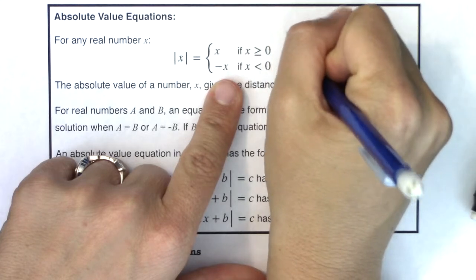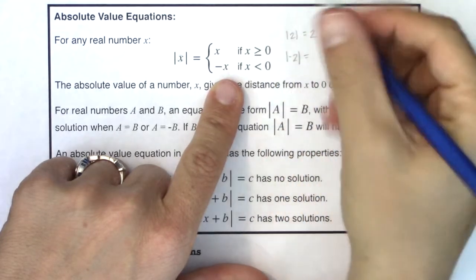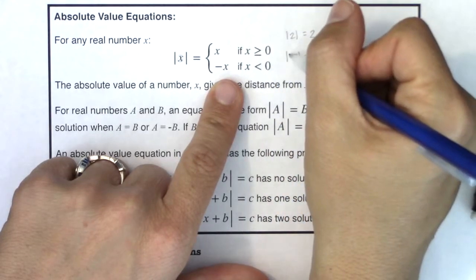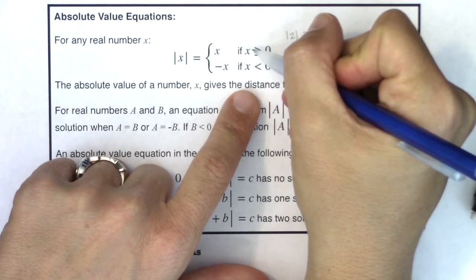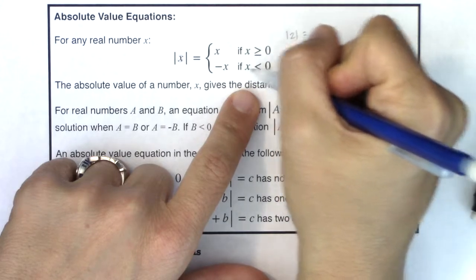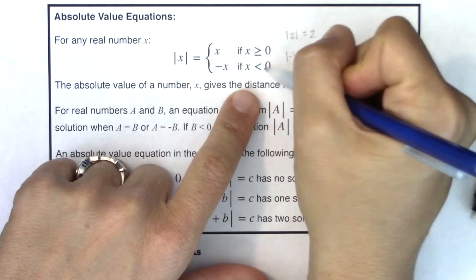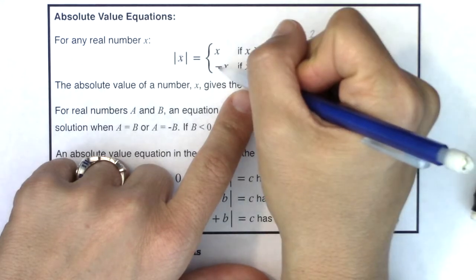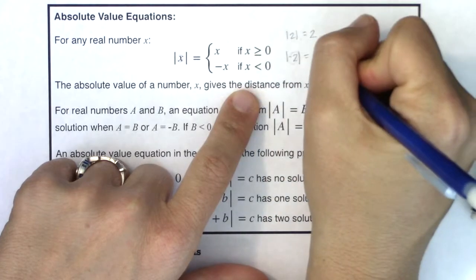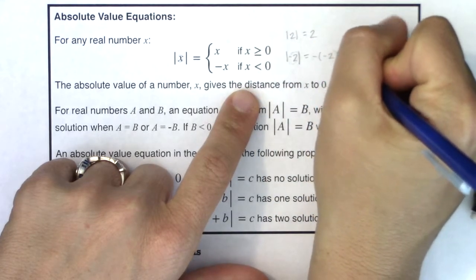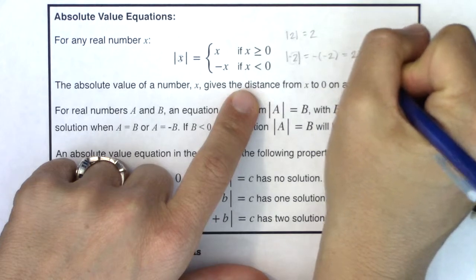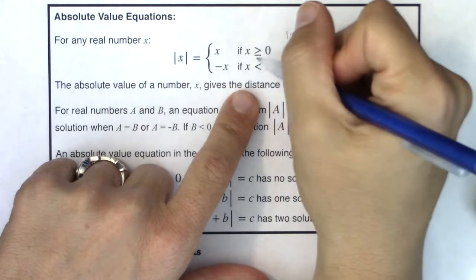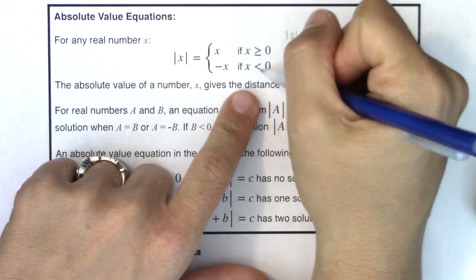Now let's say I have the absolute value of negative two. The number inside my absolute values is negative two. Is negative two greater than or equal to zero, or is it less than zero? Negative two is less than zero, so it says write the opposite of that number — the negative of negative two — which is positive two.